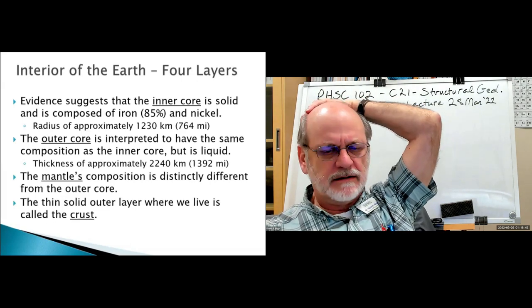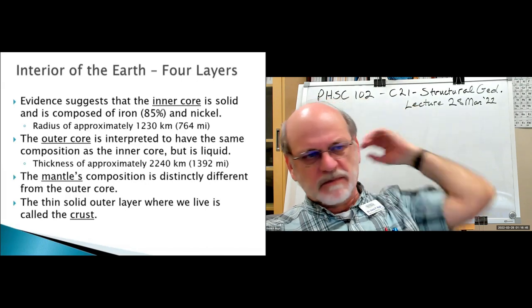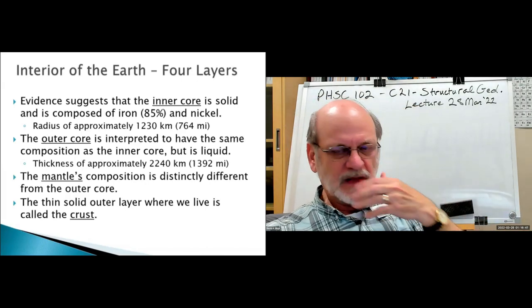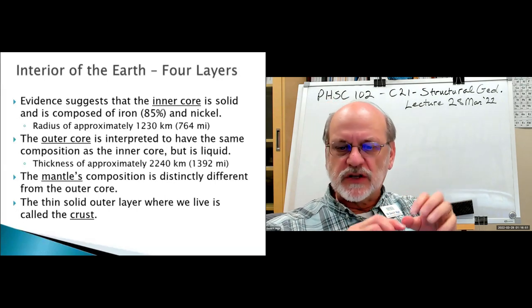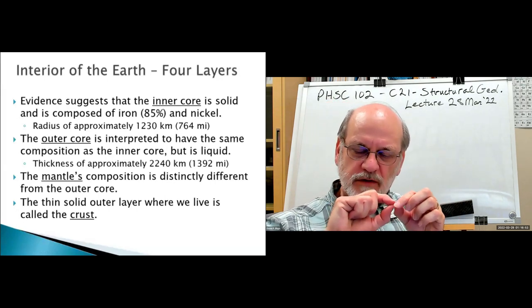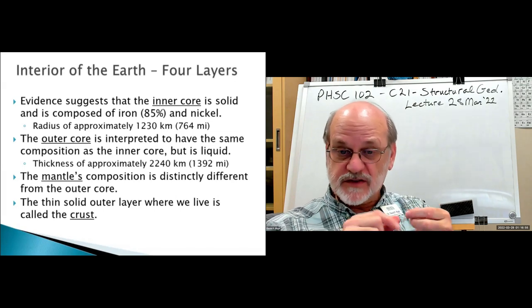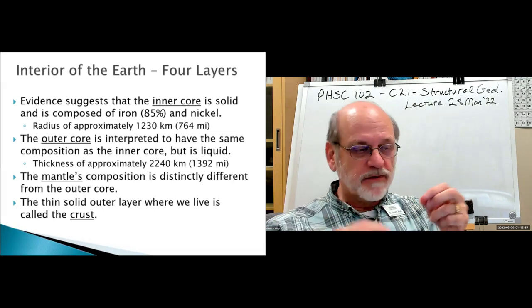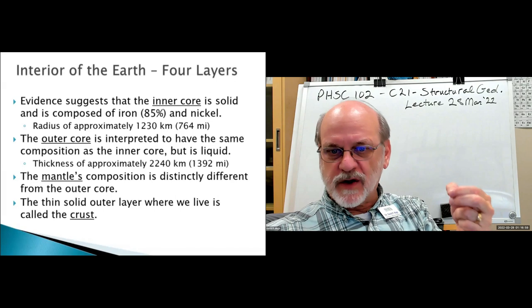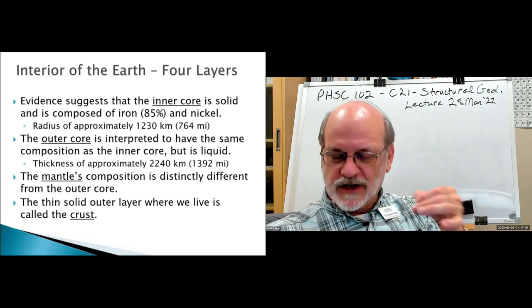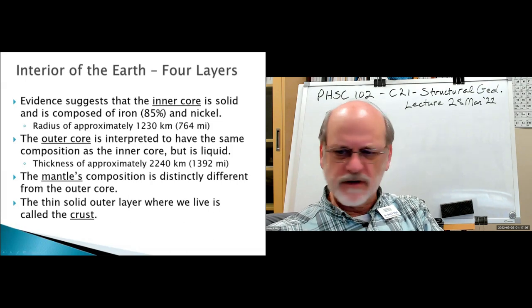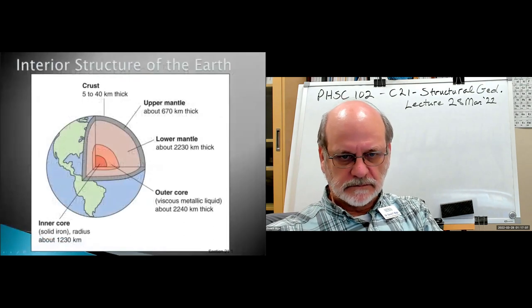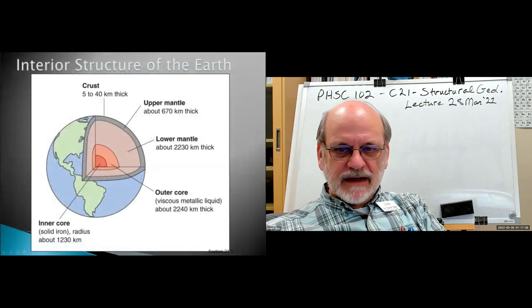The mantle's composition is distinctly different from the outer core. And then there is the very thin outer crust — by comparison, it would be like the dried outer skin of an onion relative to the size of the onion. Very, very thin.